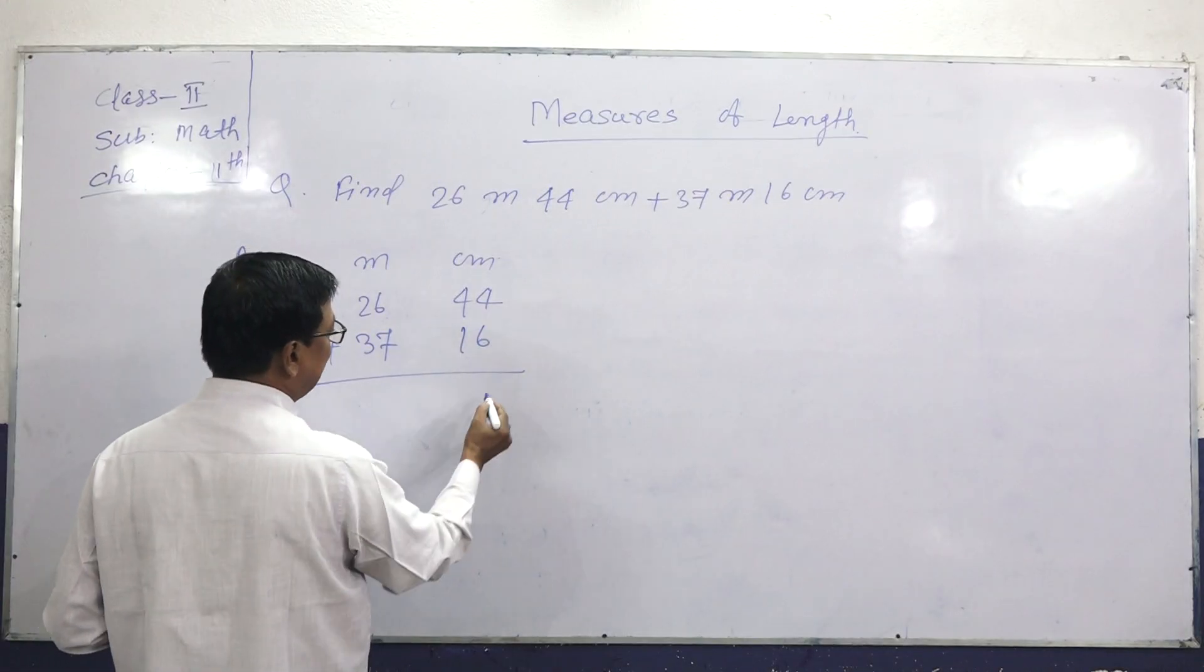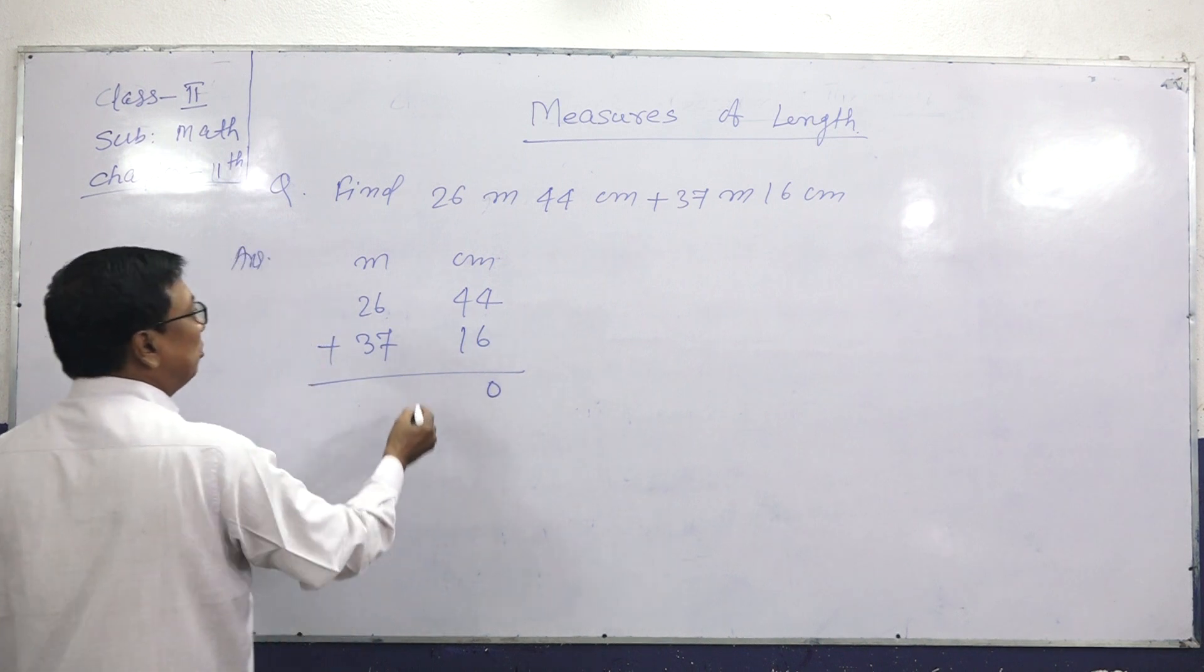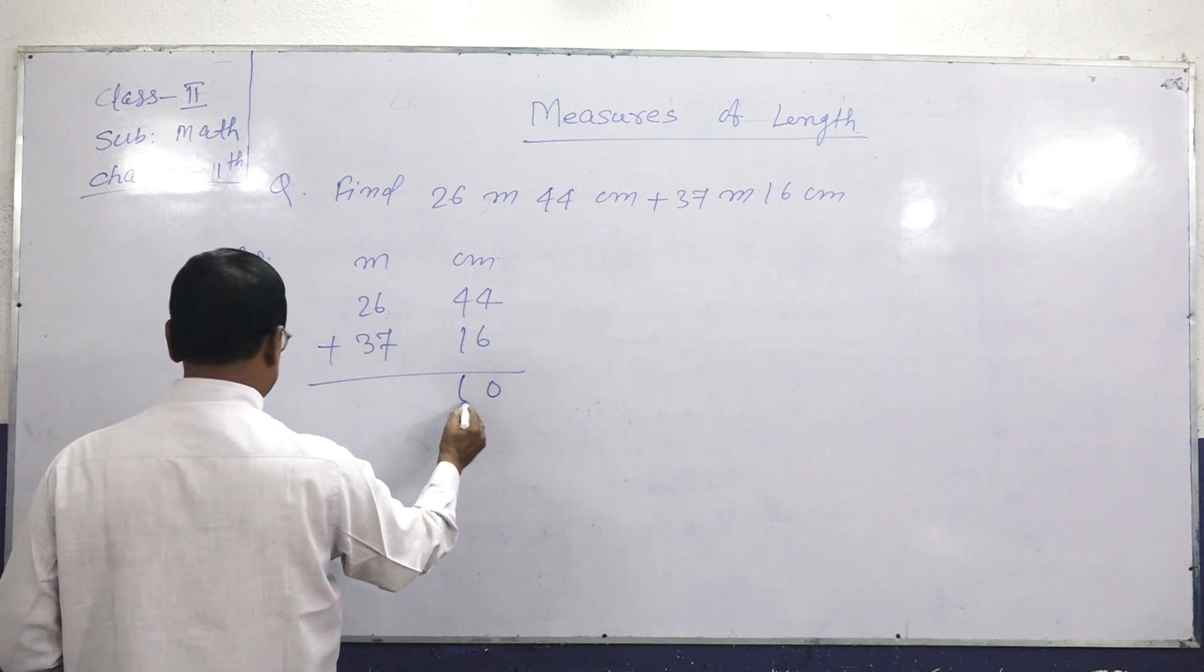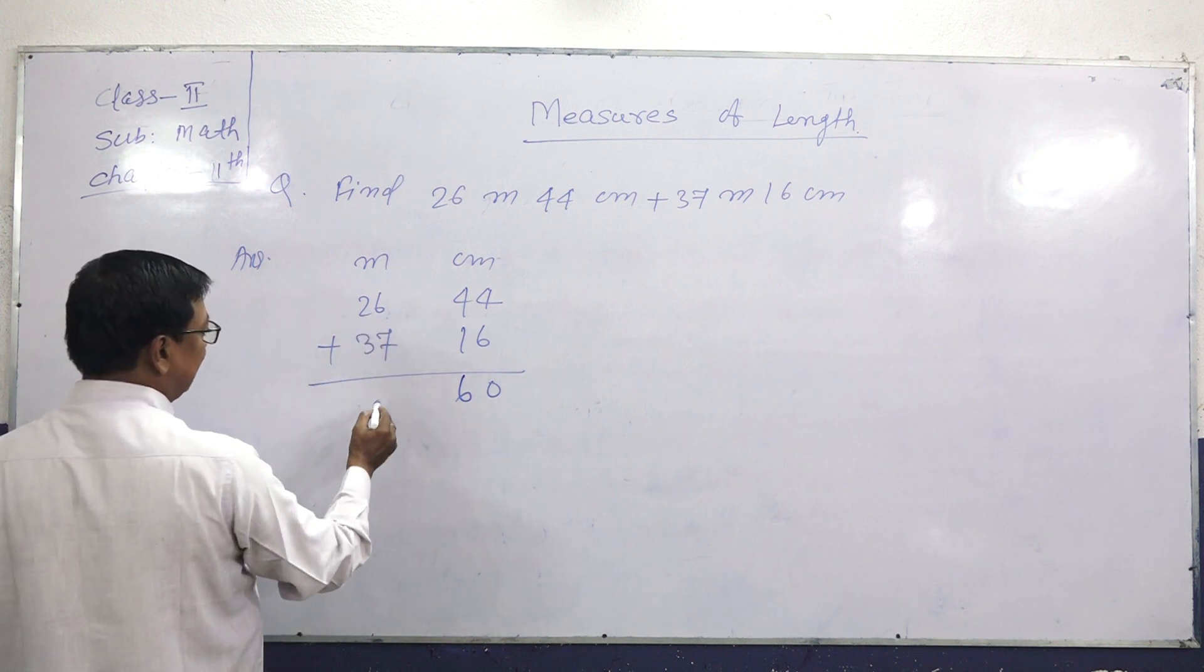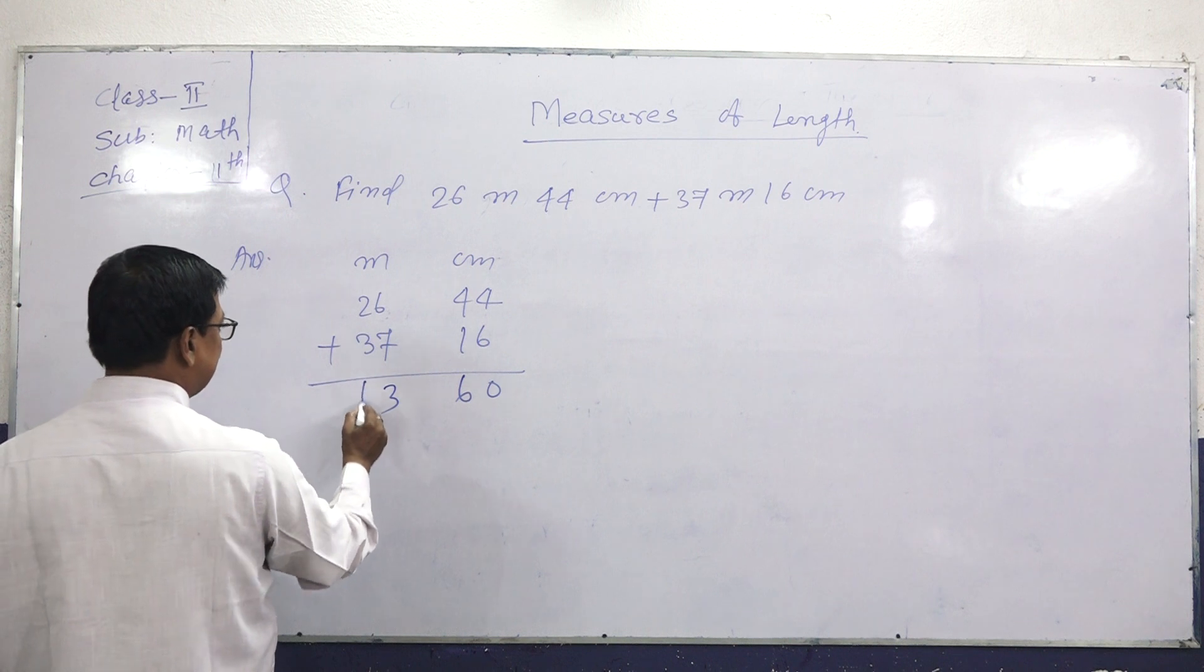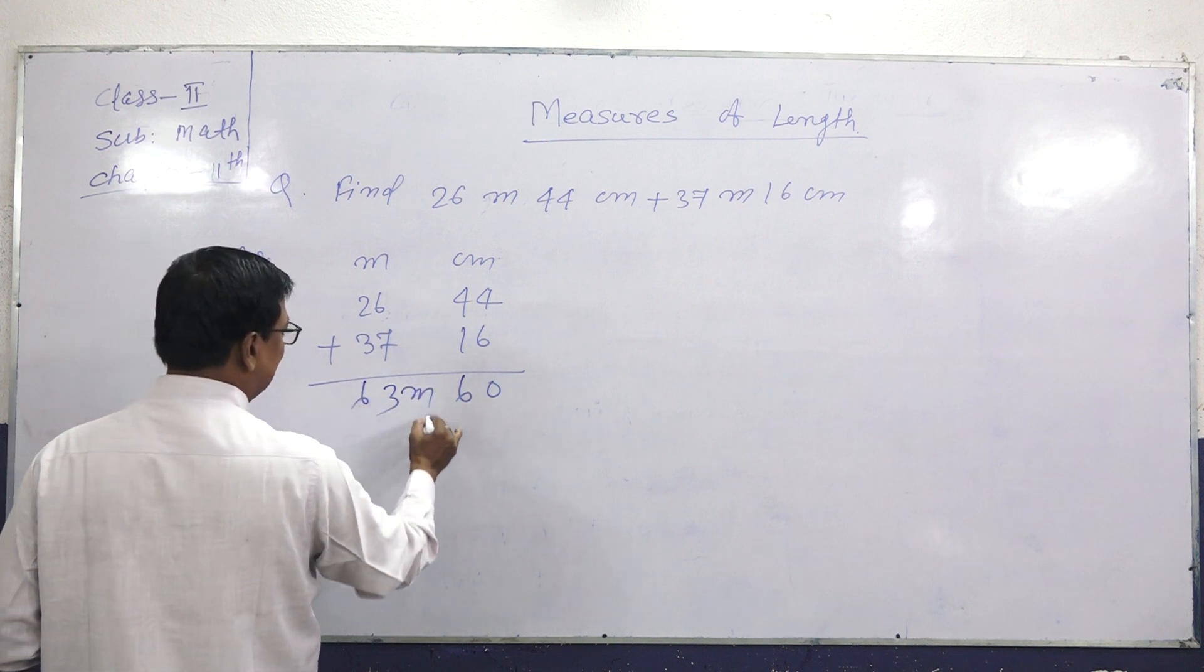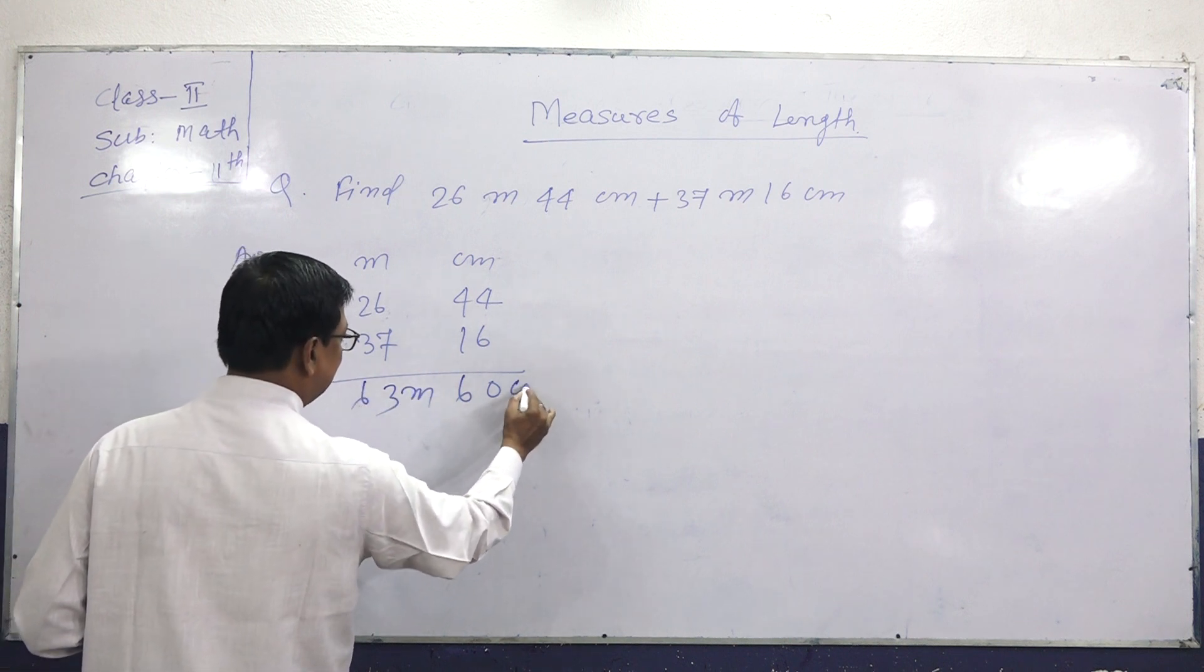6 plus 4 equals 10. Carry 1. 4 plus 1 equals 5, plus 1 equals 6. 7 plus 6 equals 13. Carry 1. 3 plus 2 equals 6. Answer: 63 meters, 60 centimeters.